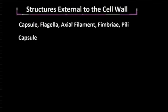In this video we're going to talk about the structures external to the cell wall. Let's get started. Structures external to the cell wall include the capsule, the flagella, the axial filament, the fimbriae, and the pili. Let's start by first talking about the capsule.